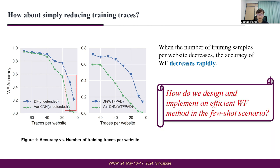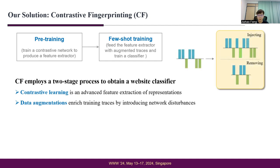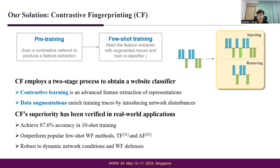How do we design and implement an efficient WF method in a few-shot scenario? We propose Contrastive Fingerprinting, which leverages contrastive learning and data augmentation in a few-shot scenario. Contrastive learning is good at feature representation via data augmentations, training on a few collected traces. CF's superiority has been verified — it outperforms two popular few-shot WF methods, considering different TBB versions and network conditions.